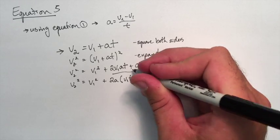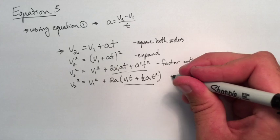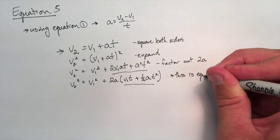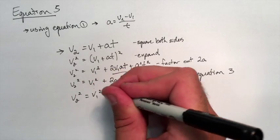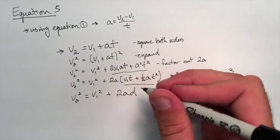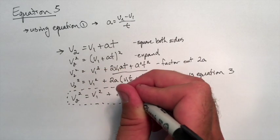Now we recognize whatever's in the brackets, that is equation 3. So we can just substitute a D in for that. And now there you have it. There's our fifth equation.